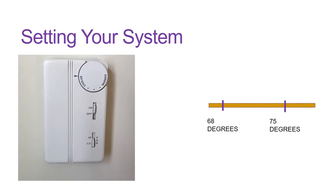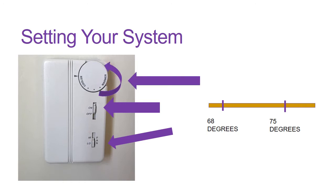To turn on your air, make sure the switch is in the on position. After turning on your unit, you can select a fan speed — high or low — and then adjust the temperature between cool and warm. However, the temperature of the room will remain within a set range of temperatures.